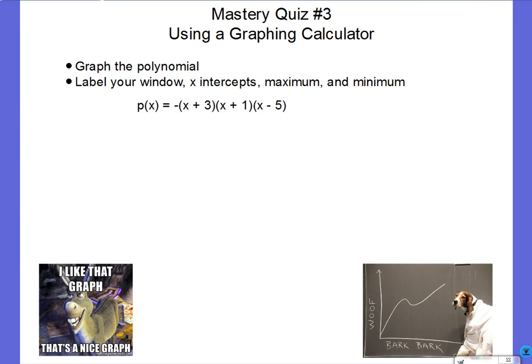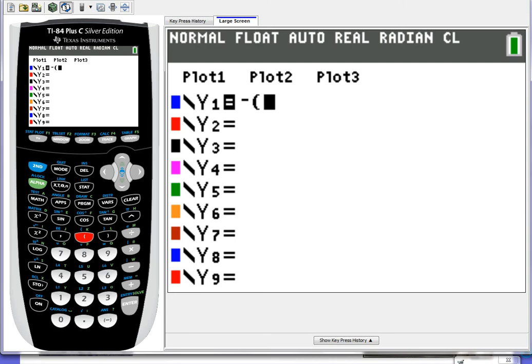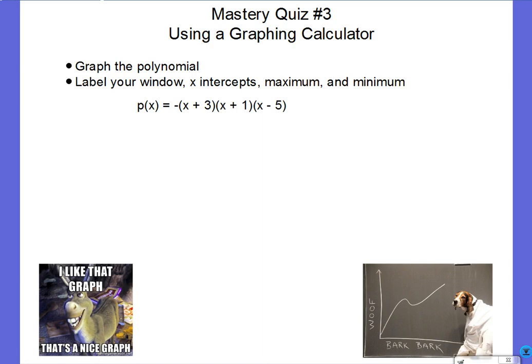So we got x plus 3, x plus 1, and x minus 5. Note that I'm not like foiling any of this. I'm just writing exactly what's there. And x minus 5. So double checking, x plus 3, x plus 1, x minus 5.